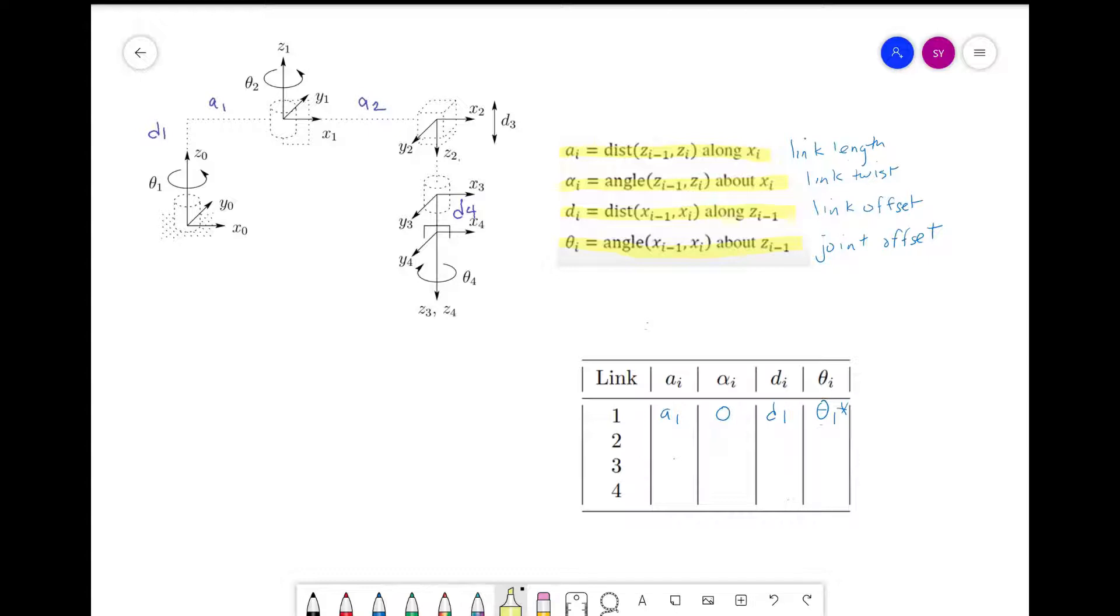For link two, we see the distance from z_1 to z_2 measured along x_2 is a_2. Next, for alpha, we need to see how we can rotate z_1 around x_2 to match z_2. And we'll see from this picture that we need to rotate 180 degrees.